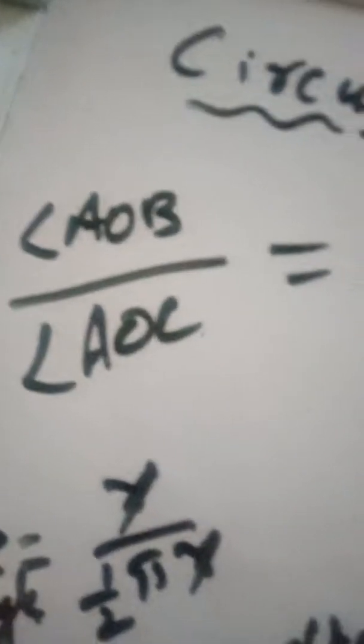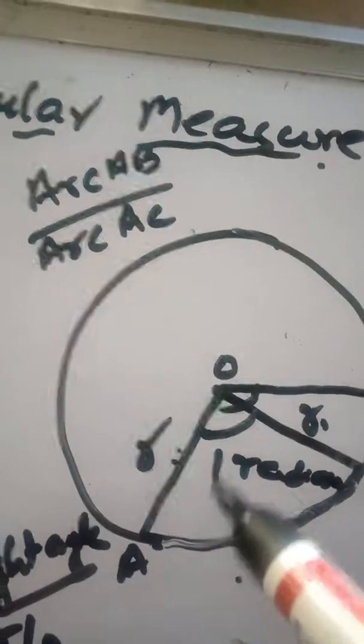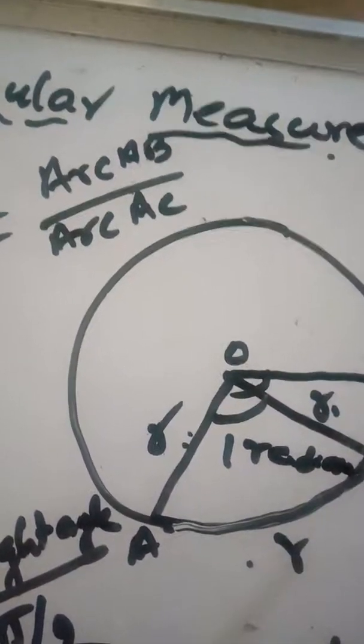Here, this is radius R, and arc AB is R.